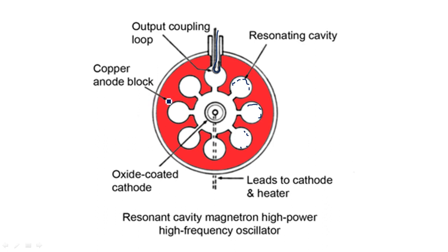This is the copper anode block with an oxide-coated cathode. The cathode material is coated with oxide and leads to the cathode heater. In order to generate oscillations, we need to heat this element because it is the main element to produce electrons. Those electrons are generated and travel within the resonant cavities, producing the oscillations.